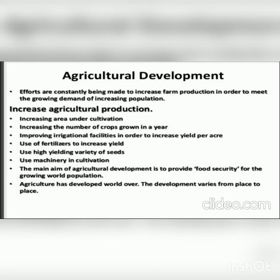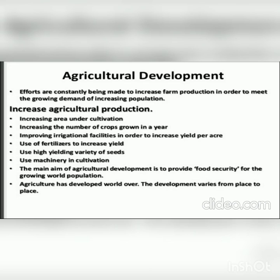Efforts are constantly being made to increase farm production in order to meet the growing demand of an increasing population. Ways to increase agricultural production include: increasing the area under cultivation, increasing the number of crops grown per year, improving irrigation facilities, increasing yield per hectare, using fertilizers, using high-yield variety seeds, and using machinery in cultivation. The main aim of agricultural development is to provide food security for the growing world population.